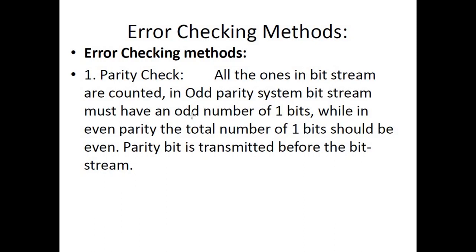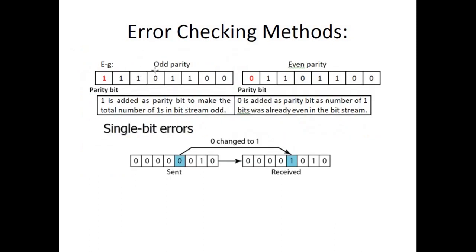A parity bit is transmitted before the bit stream. For example, here is a bit stream — if it follows odd parity and there are four ones (an even count), we add a one as the parity bit to make it odd, giving five ones. If it is even parity and there are already four ones (even), we simply add a zero.